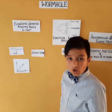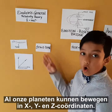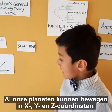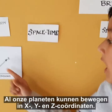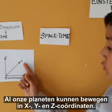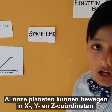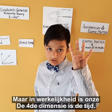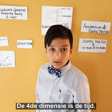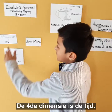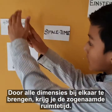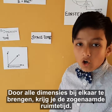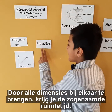To understand this, we need to know what space-time is. All the planets move in X, Y, and Z coordinates. But in reality, space is four-dimensional, and the fourth dimension is time. By putting all these dimensions together, we get what we call space-time.